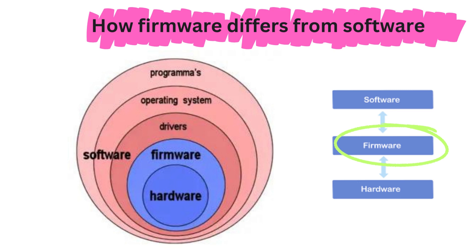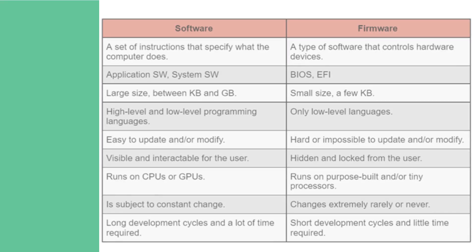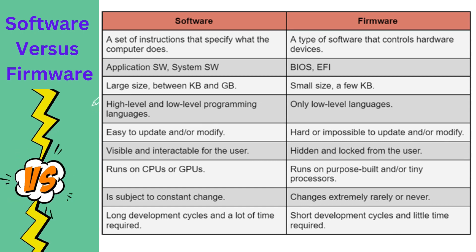Firmware is also a sort of software that works on hardware, so let's see how firmware differs from software. Software is a set of instructions that specify what the computer does, whereas firmware is a type of software that controls hardware devices. Examples of software are application software and system software; examples of firmware are BIOS and EFI. Software files are much larger — kilobytes, megabytes, or gigabytes — whereas firmware is only a few kilobytes and its size is small. Software can be written in high-level or low-level programming languages, whereas firmware is only written in low-level languages.